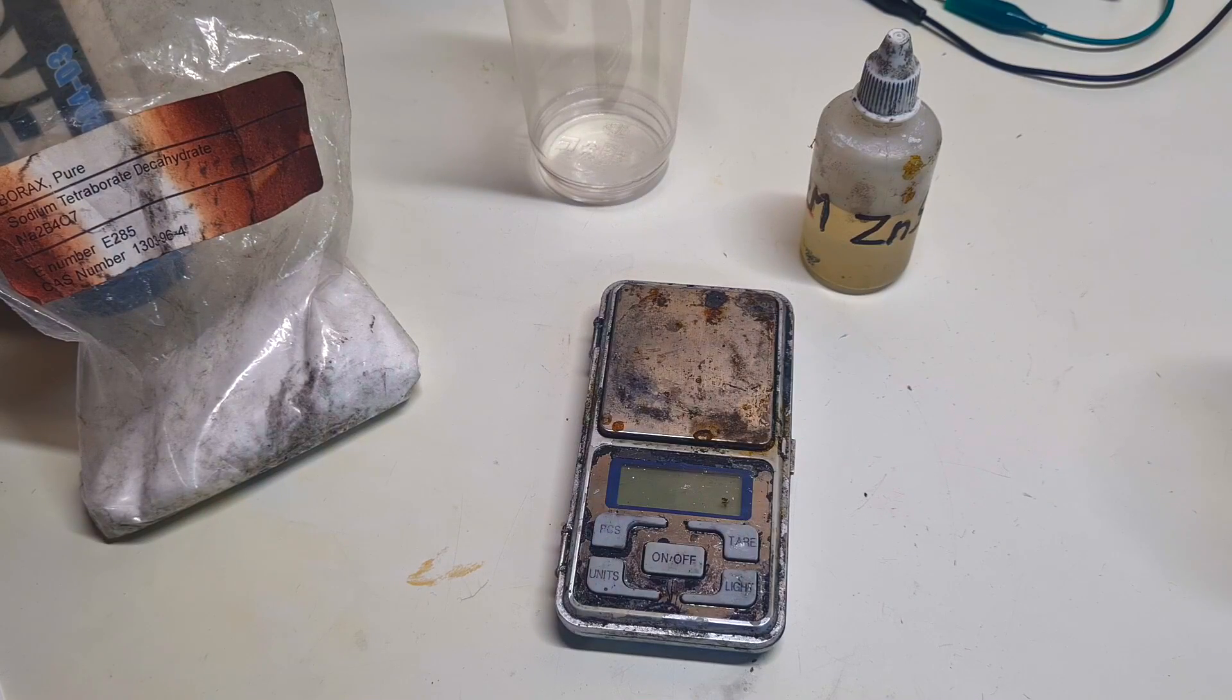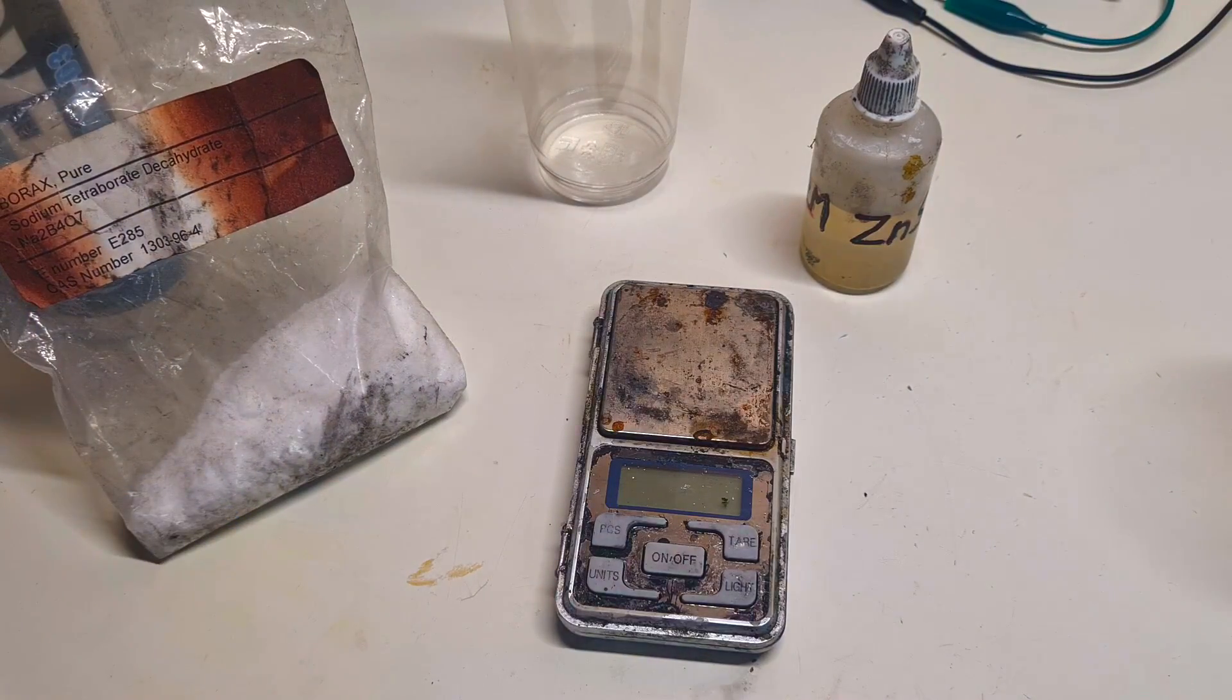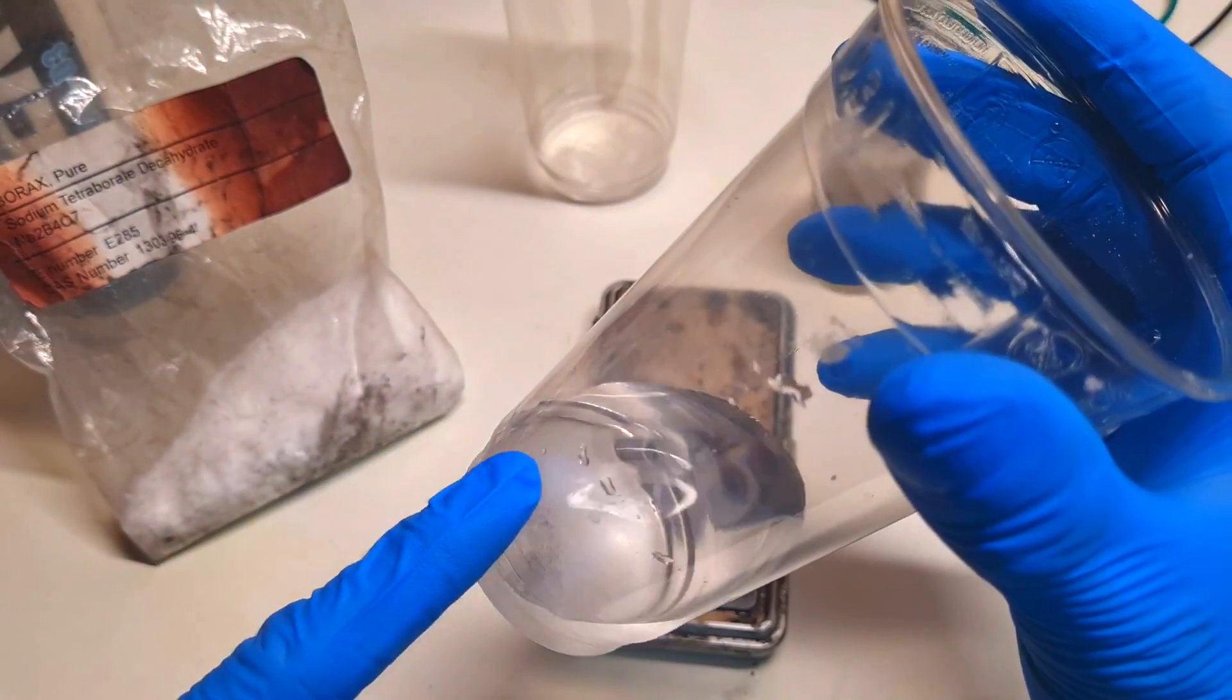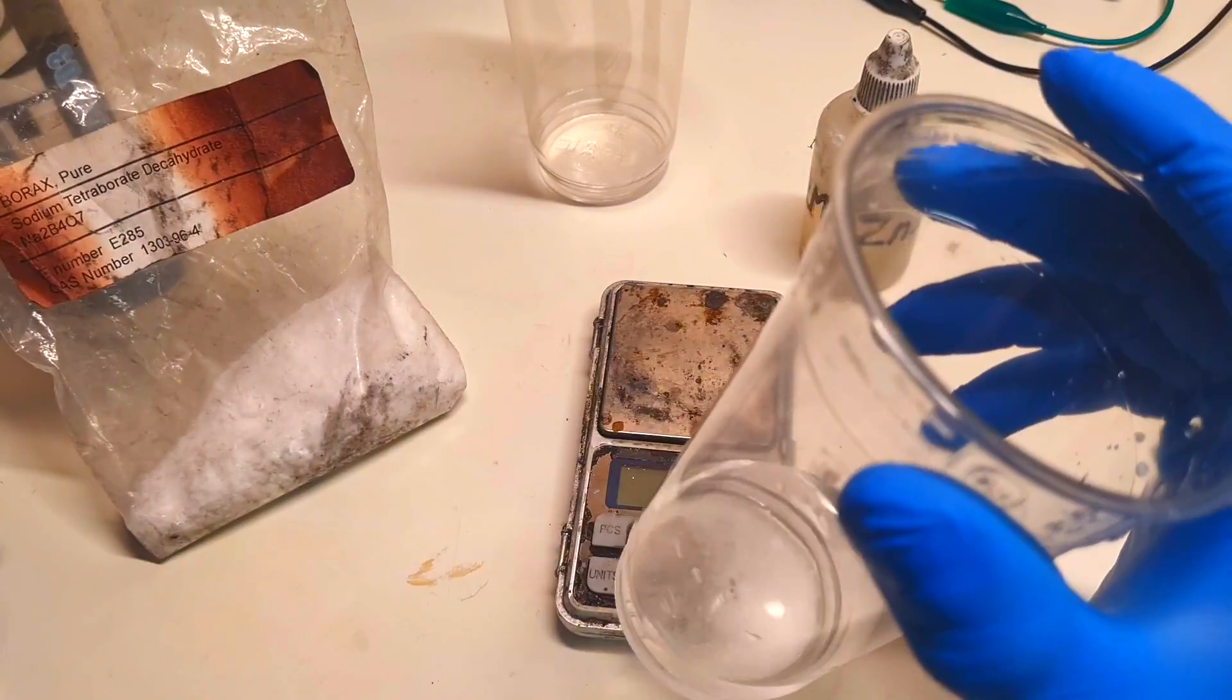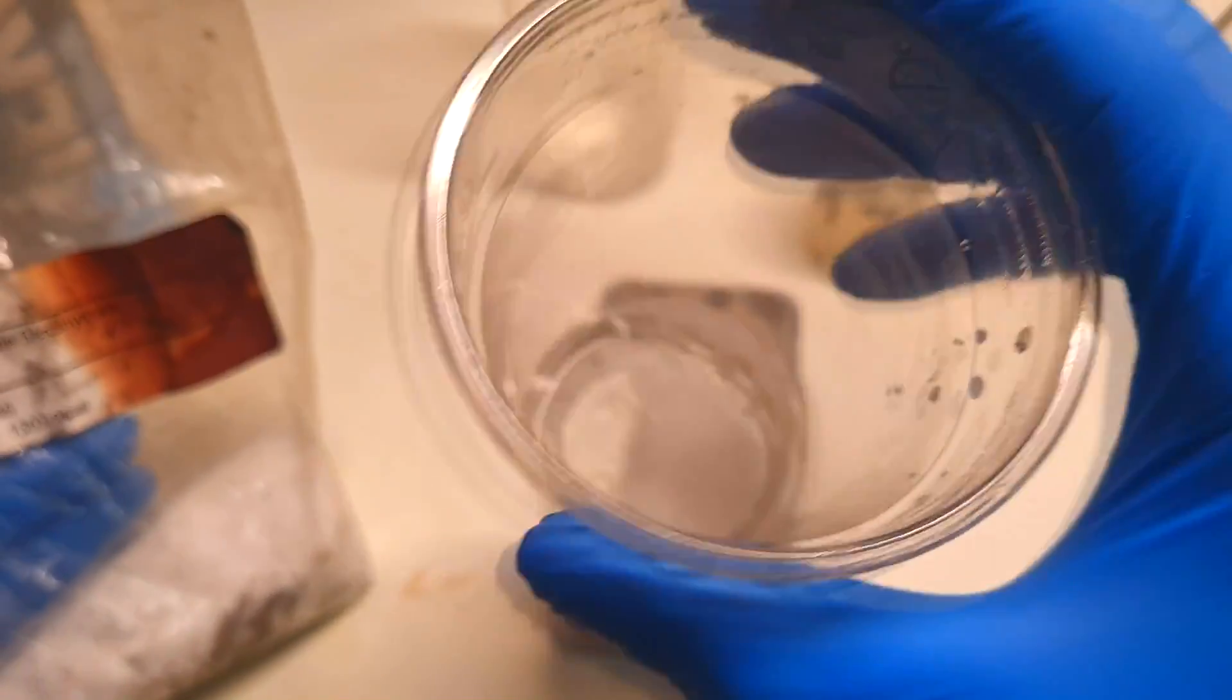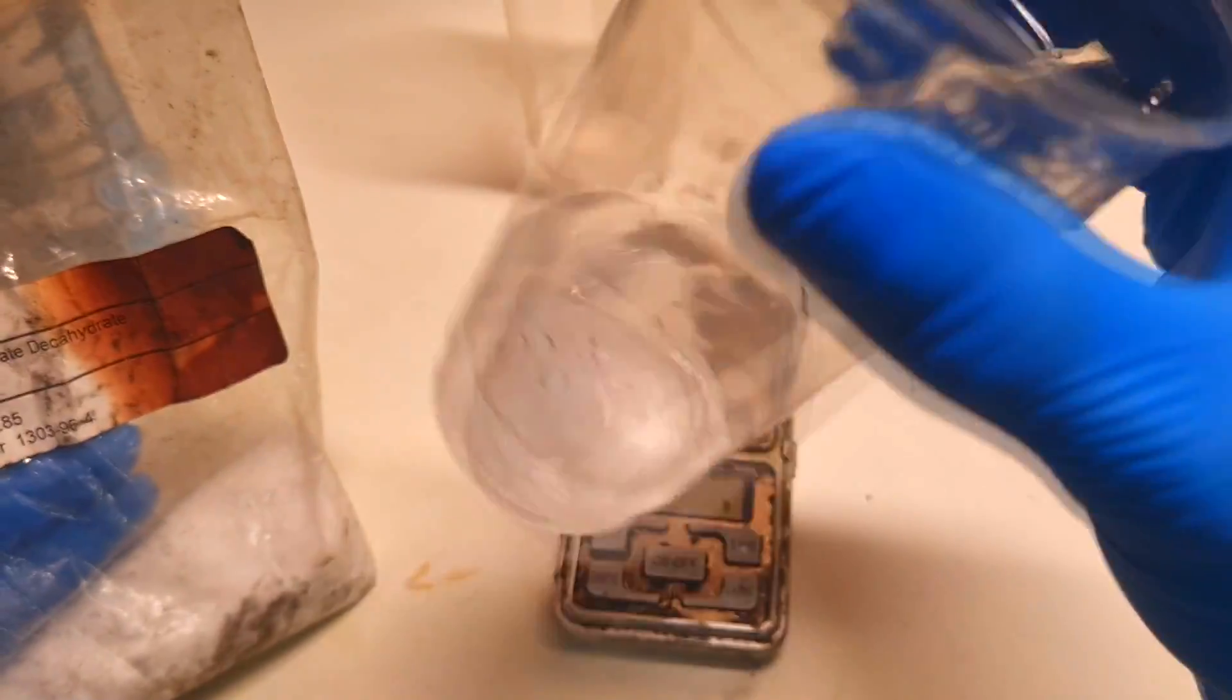Now, how to make this PVA borax polymer gel. First I will start with the borax, but I already made some solution of borax. Into 30 ml of water I added 1 teaspoon of borax. Here I have 30 ml of water and 1 teaspoon of borax.